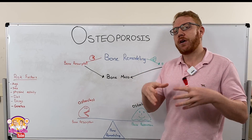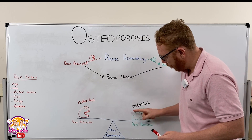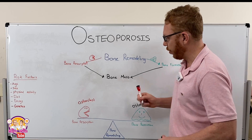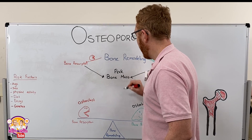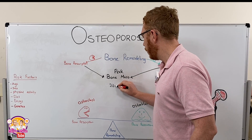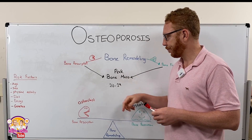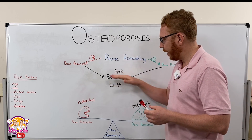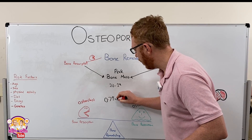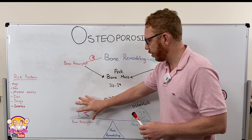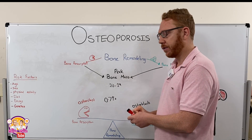In our early ages of life — childhood and adolescence — the osteoblasts win, so we see more bone being formed, leading to what we call peak bone mass at around 20 to 29 years. After this age, peak bone mass starts to drop off by approximately 0.7% per year, as osteoclasts become more active relative to osteoblasts.